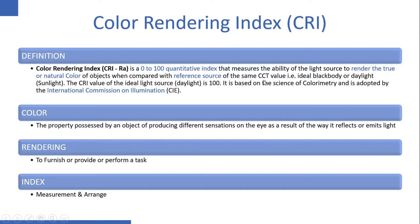that measures the ability of a light source to render the true or natural color of an object when compared with a reference source of the same CCT value — that is, an ideal black body or daylight. The CRI of an ideal light source, that is daylight, is 100. It is based on the science of colorimetry and is adopted by the International Commission of Illumination. In short, CRI is a property of a light source to render the true or natural color of an object.